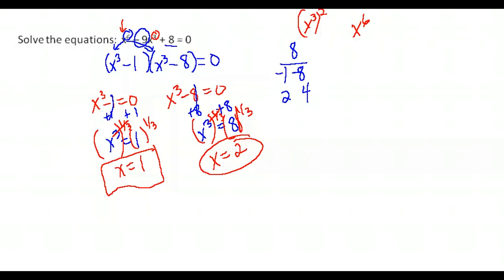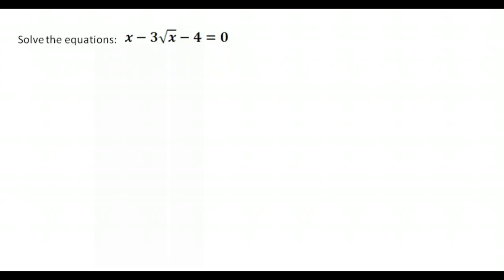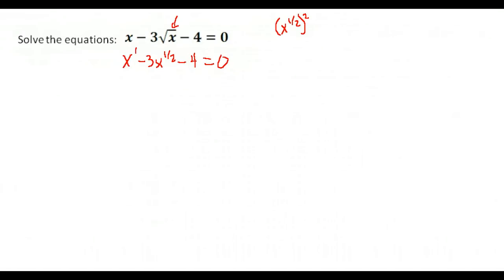Here's another one that's quadratic in form. Square root means the one-half power, so what we have is x to the first power minus 3 times x to the one-half power minus 4 equals 0. To confirm it's quadratic in form: if we square x to the one-half, we get x to the first power, which is the leading term. So this is quadratic in form and we can try to solve by factoring.